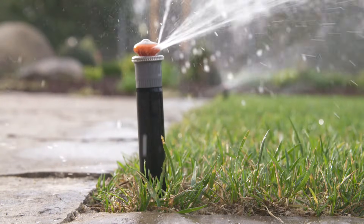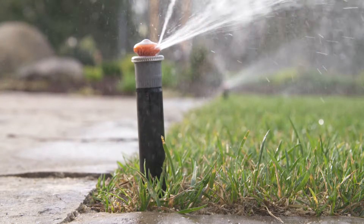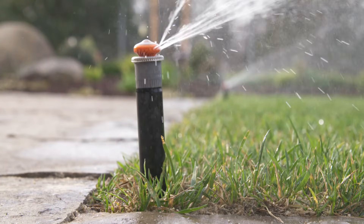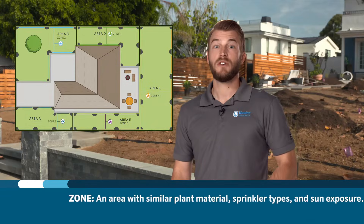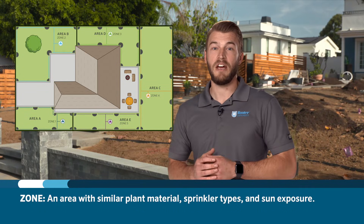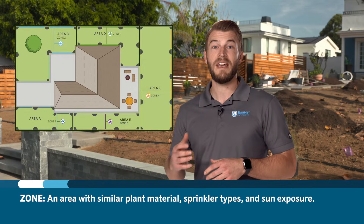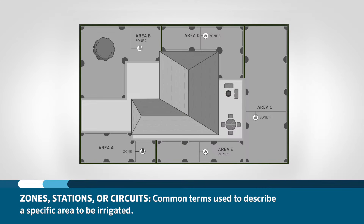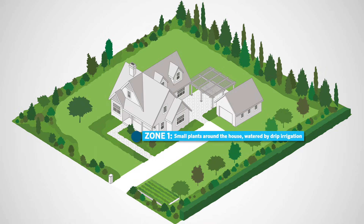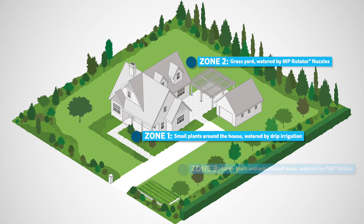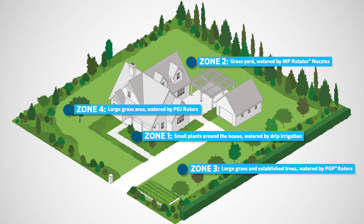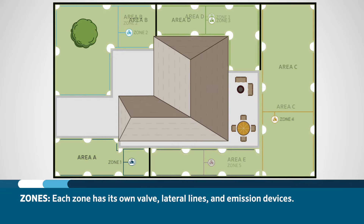When the valve opens, the lateral line fills up with water and the sprinklers pop up, or the drip lines are filled with water and build pressure to activate the emitters. So what is a zone? A zone is an area with similar plant material, sprinkler types, and sun exposure. Zones, stations, or circuits are common terms used to describe a specific area to be irrigated — in this training we will use the term zone. Areas throughout the property are divided into multiple zones depending on water capacity and the landscape needs. Each zone will have its own valve, lateral lines, and emission devices.